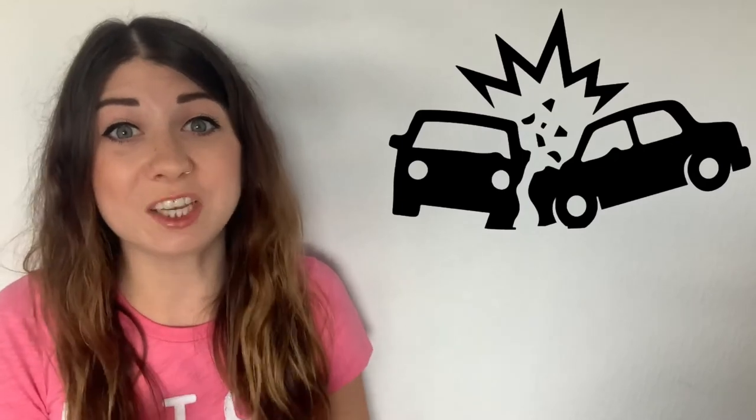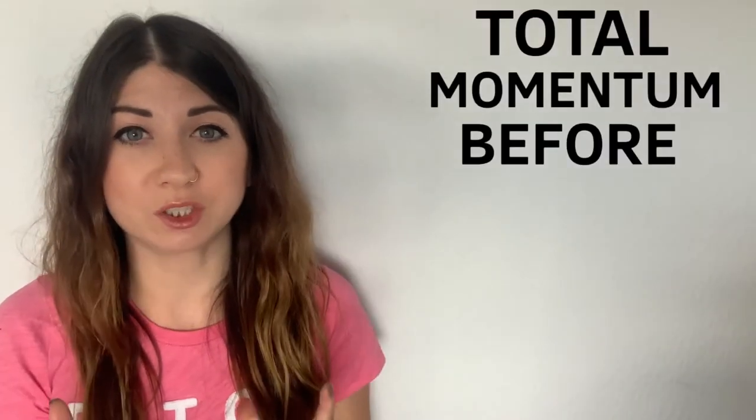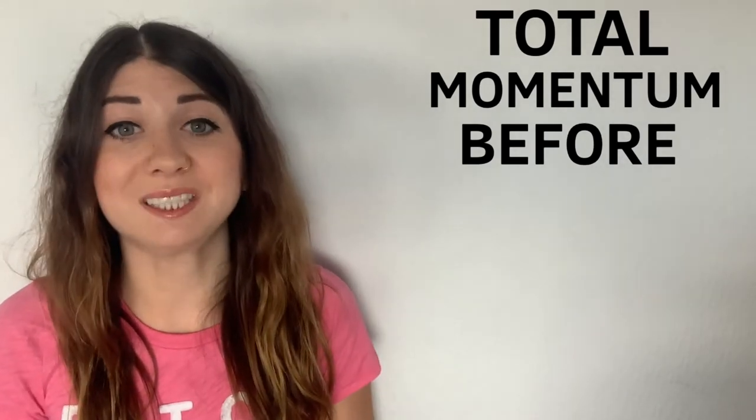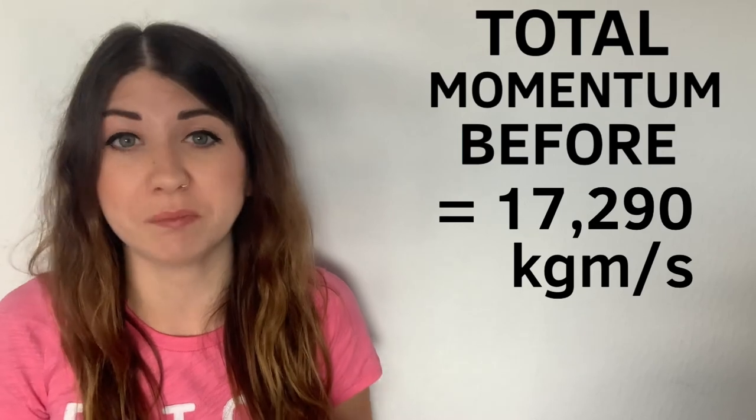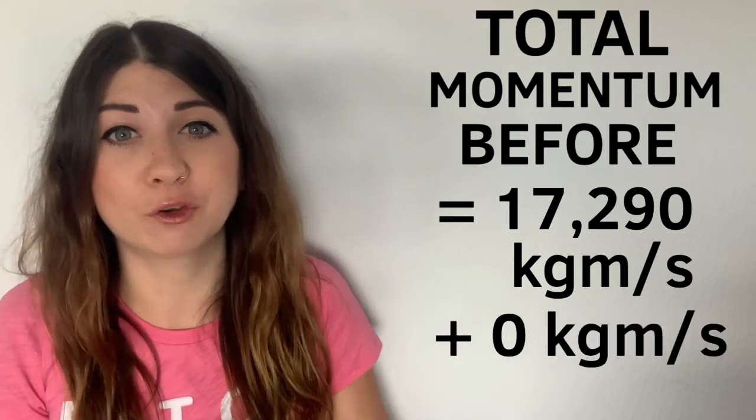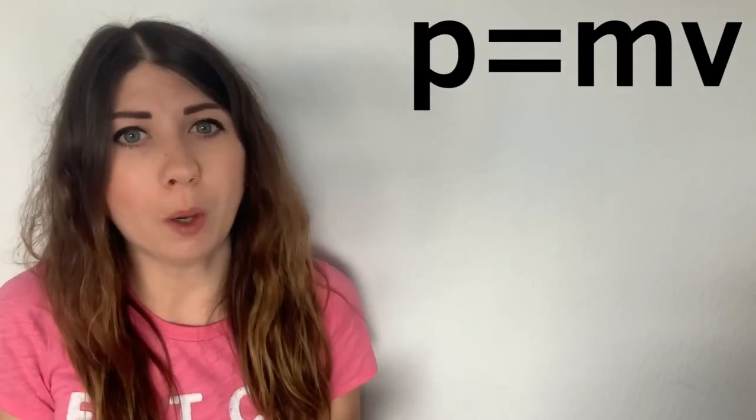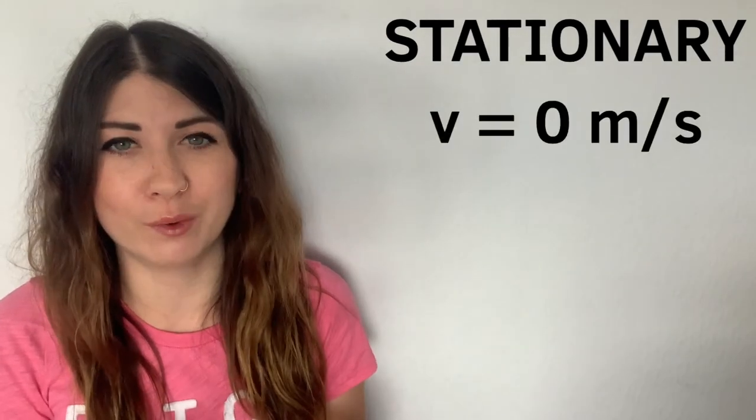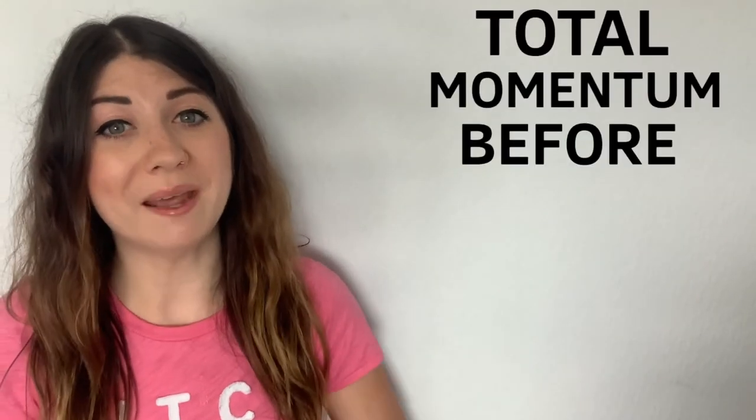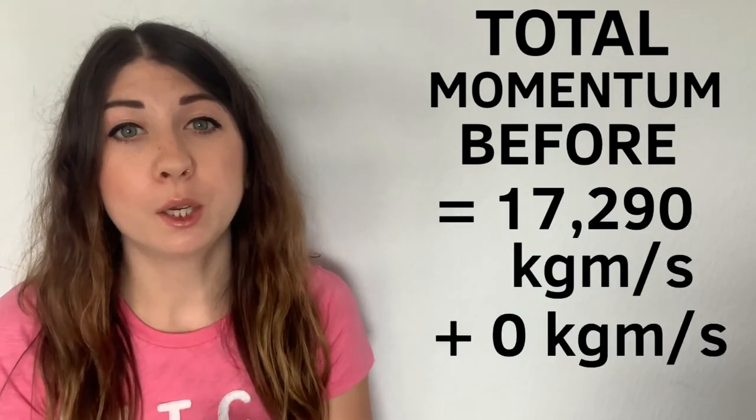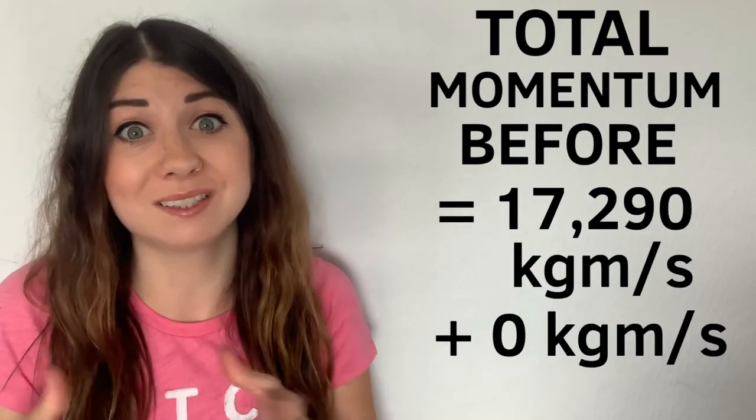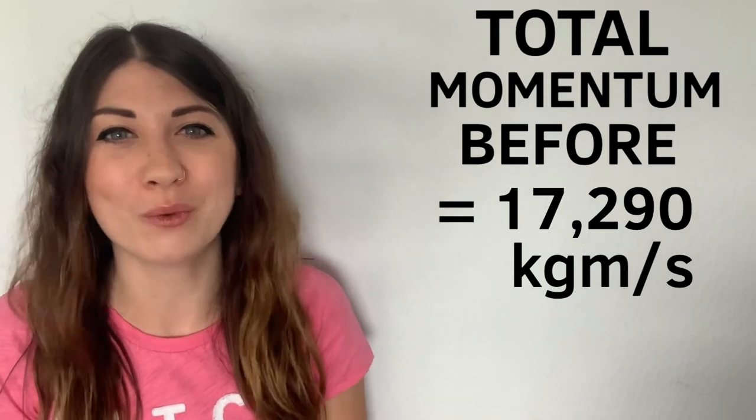Let's continue with the car example if that car drove into another stationary car. The total momentum for both the cars before the collision would be 17,290 kilograms meters per second for car A and 0 kilograms meters per second for car B. This is because momentum is mass times the velocity, but if car B was stationary its velocity would be zero therefore its momentum would be zero. So the total momentum before the collision would be car A plus car B which would be 17,290 plus zero which would equal 17,290 kilograms meters per second.